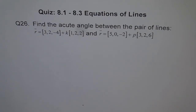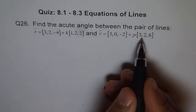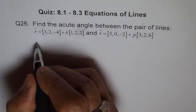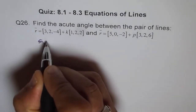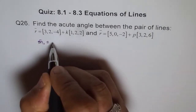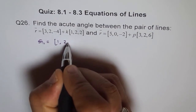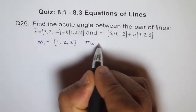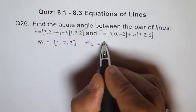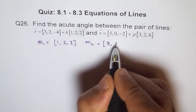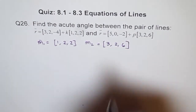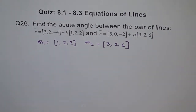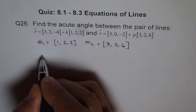It's very similar to the previous one. The only thing is this is the vector equation. And here we know what the directions are. So M1 is (1, 2, 2) and M2 is (3, 2, 6). So you can find M1 dot M2 and then find the angle between them.